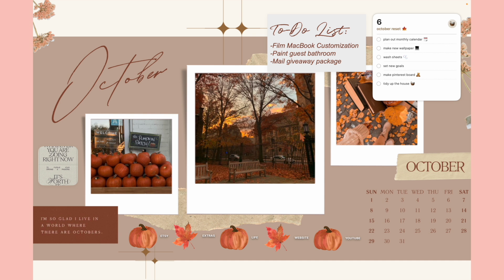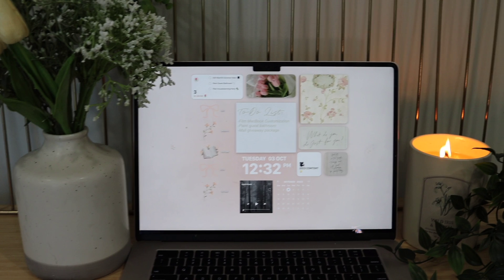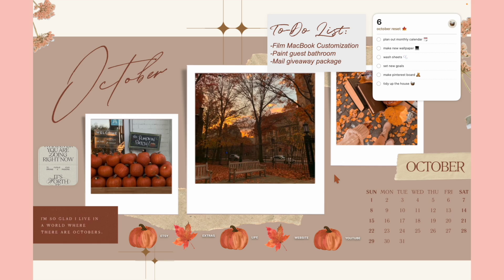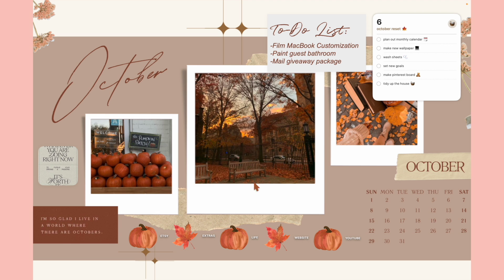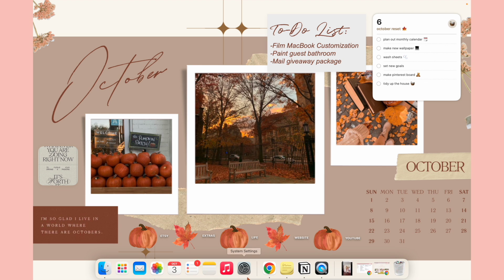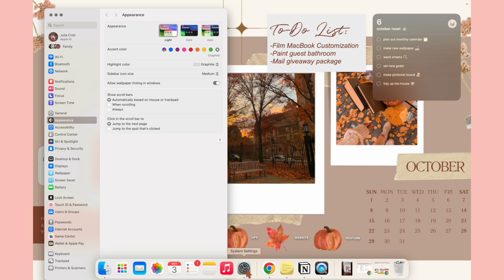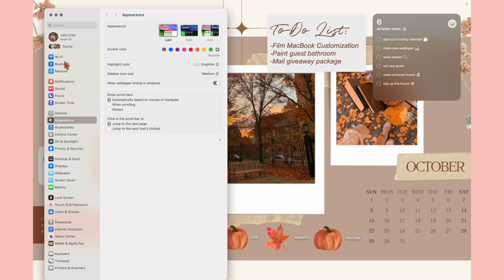Here's the first wallpaper combination I'm showing you — a fall vibe. Step number one: if you can't tell, my cursor is a different color. I changed it to fall colors to match the vibe. I'll show you how to do that. Go down to System Settings, then Accessibility, then Display.